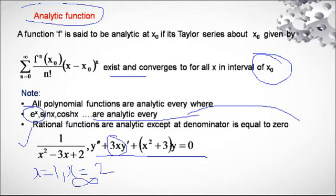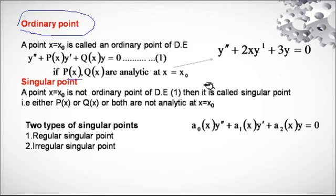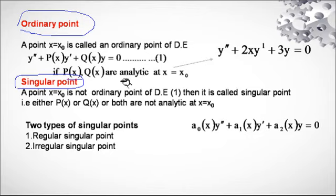An ordinary point: a point x₀ is said to be an ordinary point of the standard linear differential equation y'' + P(x)y' + Q(x)y = 0 if P(x) and Q(x) are both analytic at x = x₀. A singular point is a point which is not an ordinary point — meaning P(x) and Q(x) are not both analytic at x = x₀.